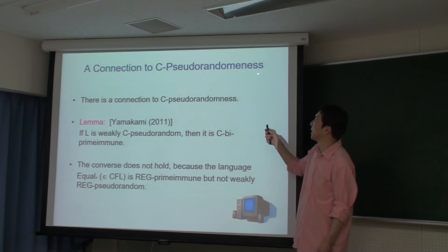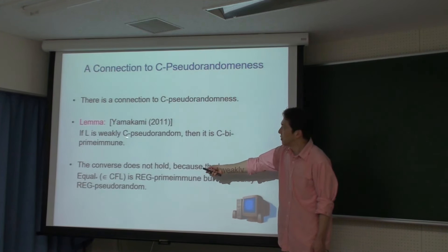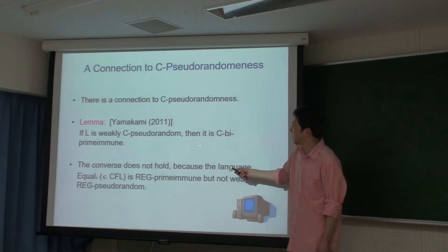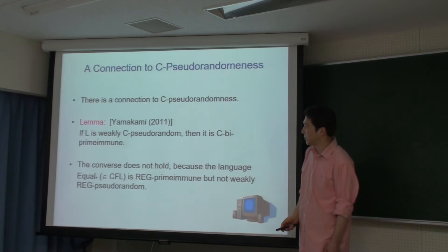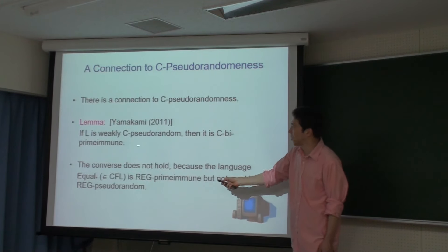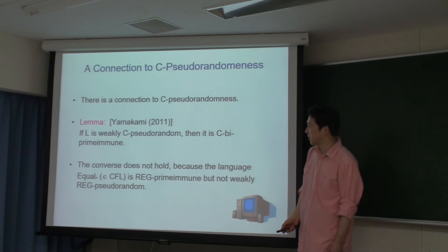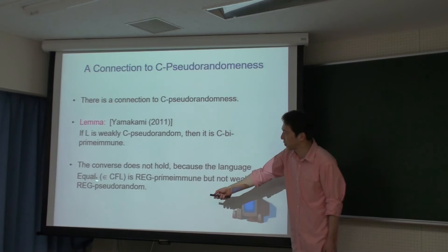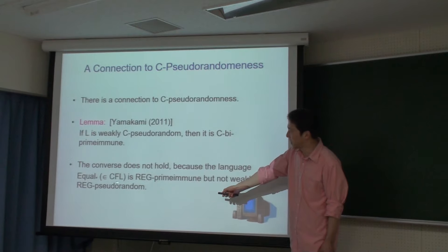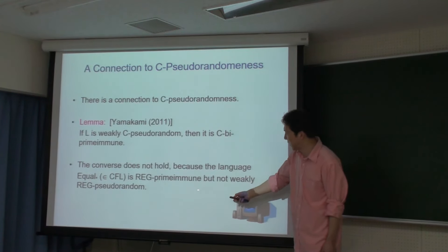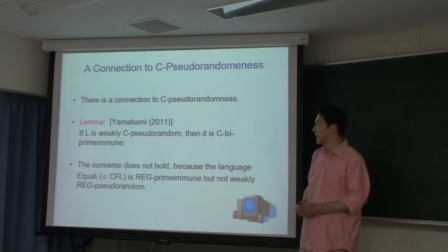Cバイプライムイミューン（bi-prime immune）というのは、LとそのLのコンプリメントの両方がprime immuneであるものです。具体的な例としてIP+があります。IP+はregular/end bi-prime immuneになり、IP+はCFLにも入っていますからCFLはregular/end bi-prime immuneです。数度ランダムであればC bi-prime immuneになりますが、逆は言えません。L_equal*という例があり、CFLに入っていてregular prime immuneですが、数度ランダムではありません。